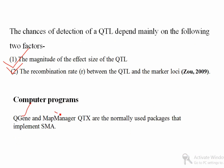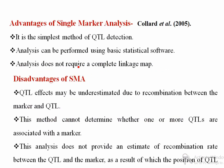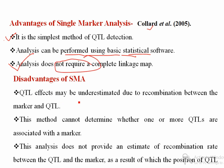Computer software you can use for single marker analysis includes QGene and Map Manager QTX. Regarding the Collard et al. 2005 paper — a very important paper for QTL mapping methods and mapping populations — SMA is the simplest method of QTL detection because you are simply using t-test and regression analysis. Analysis can be performed using basic statistical software since there is no QTL-by-QTL or QTL-by-environment interaction. Also, analysis does not require a complete linkage map.